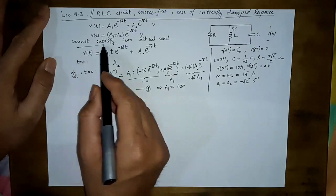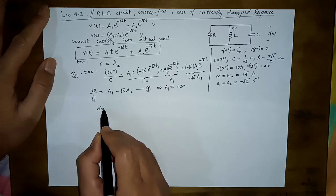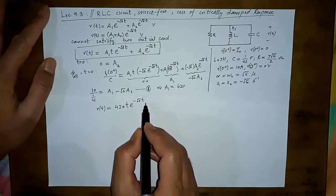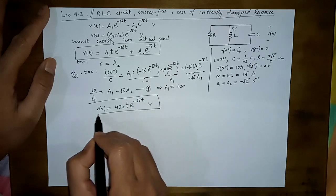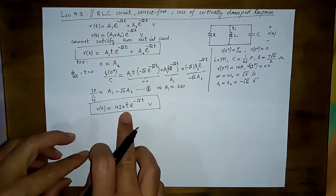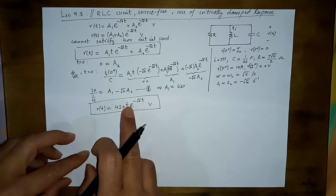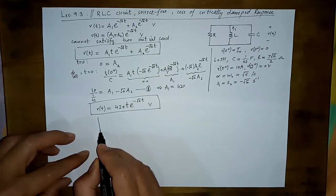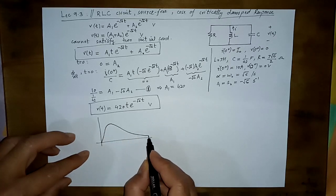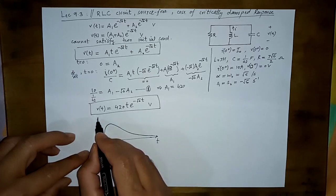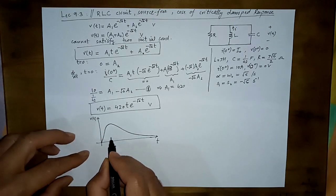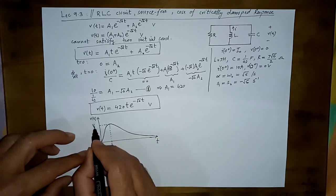Now that A1 = 420 and A2 = 0, the overall response is: v(t) = 420·t·e^(-√6·t). This is the response for the critically damped case. At t = 0 the voltage is zero (satisfying the initial condition), and as t → ∞ the term t·e^(-√6·t) → 0. So this function starts from zero, rises to a maximum, and then decays back to zero — quite similar in shape to the overdamped case.